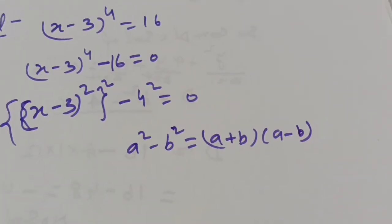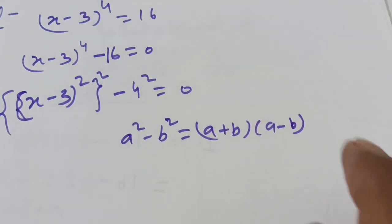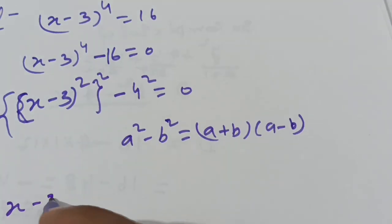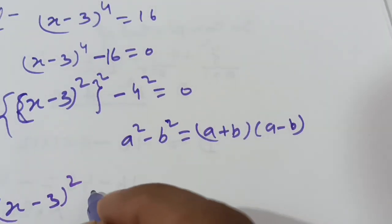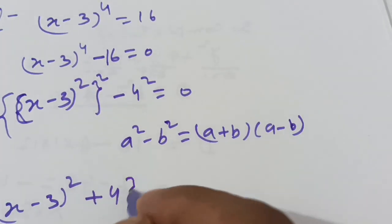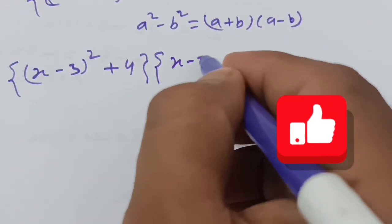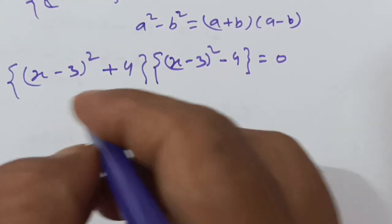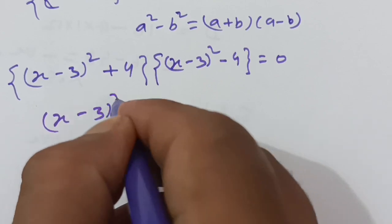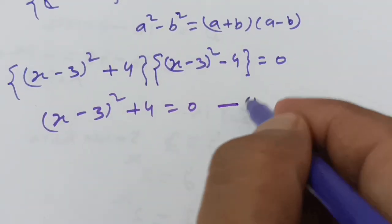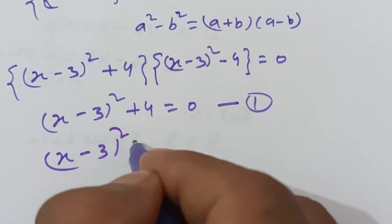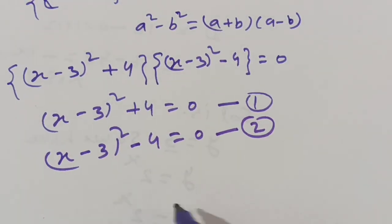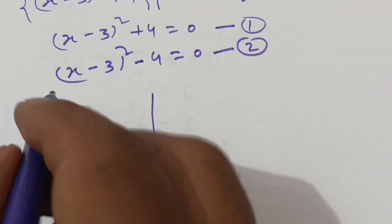Applying the difference of squares formula (a plus b)(a minus b), we get: [(x minus 3) squared plus 4] times [(x minus 3) squared minus 4] equals 0. We now solve each factor separately, calling them equation 1 and equation 2.